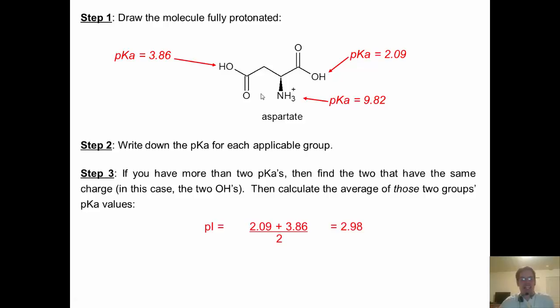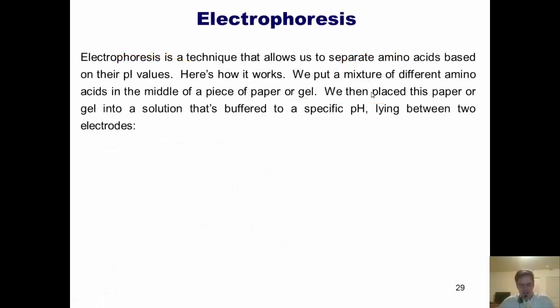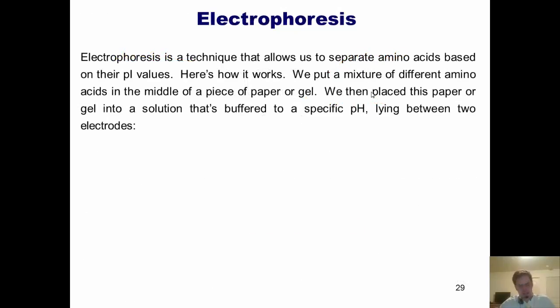Here they are. That gives me an isoelectric point, or pI, of 2.98 for aspartate, which is also known as aspartic acid. Step 4 is remember what that means. It means that at pH 2.98, aspartate will have a net zero charge. Below that pH, we start to see things get more and more protonated, which means we start to protonate these OHs, and we see an increasingly positive charge. Above that pH, we start to deprotonate things. We get more and more O minuses, which means we start to see things get more and more negatively charged.